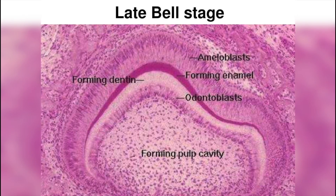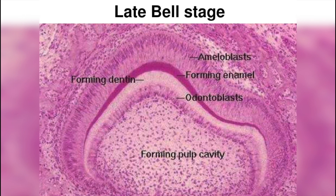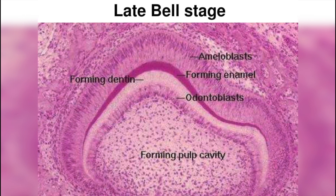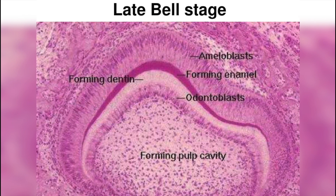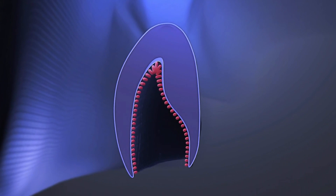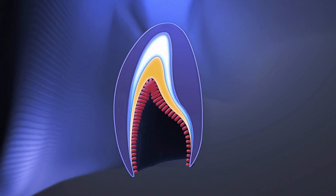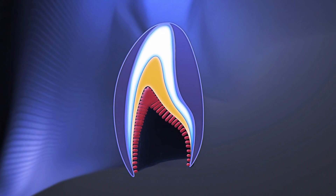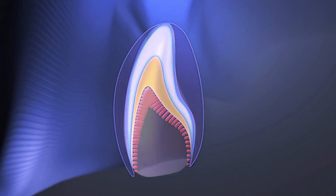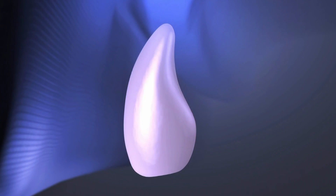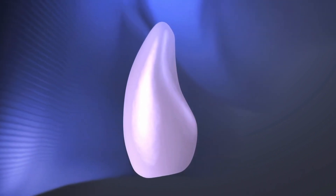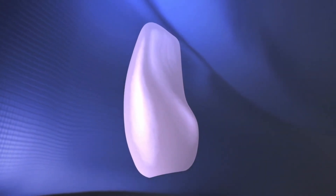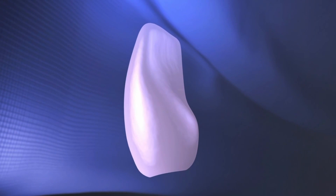Now we come to the late bell stage, which can be witnessed when the embryo is 18 to 20 weeks old. During this stage, the incremental deposition of enamel and dentine takes place. First, the organic matrix is deposited, and then the mineralization process continues. This is how the entire crown is made. Hence, we have seen the stages of tooth development which eventually lead to the formation of the crown. I hope we all have understood the process of odontogenesis. See you next time. Till then, keep learning, keep growing — thank you and all the best.